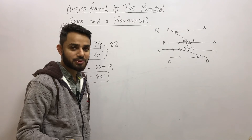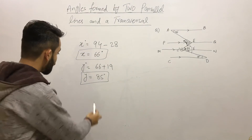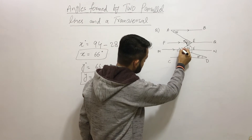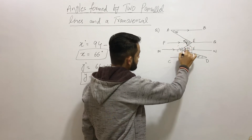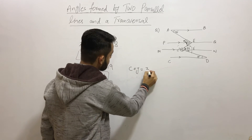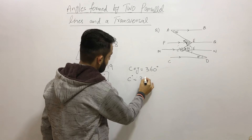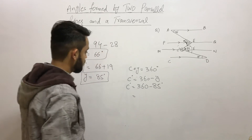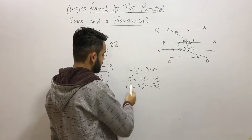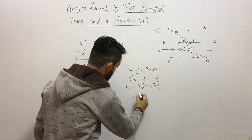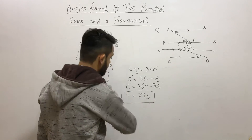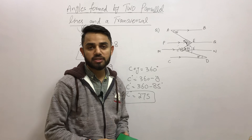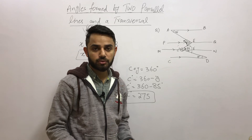We found y is 85 degrees. Our question asks for angle C. Since a full circle is 360 degrees, C plus y equals 360 degrees. Therefore C equals 360 minus 85, which gives 275 degrees. I hope this video was very helpful. If you are new to my channel, please consider subscribing and share this video with your friends so it can reach more students.